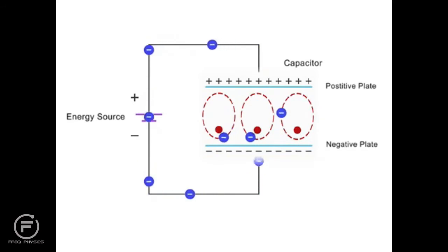This process of distorting the orbit of the electrons uses energy that then becomes stored in the dielectric material.